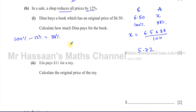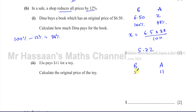We could also find 12% of 6.50 and subtract it, or directly find 88% of 6.50 — both give the same result. Now part two says: Elu pays $11 for a toy. Calculate the original price of the toy. In this case we know the sale price — $11 after the sale — and we want to find the price before the sale. The original price is 100% and the sale price is 88%.